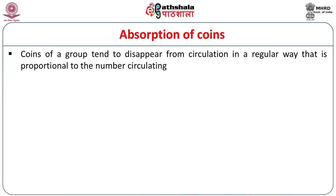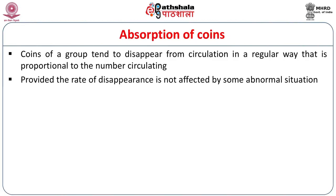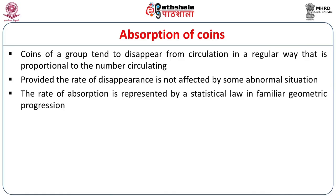This can also be termed as absorption of coins. Coins of a group tend to disappear from circulation in a regular way proportional to the number circulating — there is a sudden drop when fresh coins enter the market, as people tend to hold new coins. This sudden drop in the number of coins in circulation is known as absorption. When the number of coins reduces to half, that time period is known as the half-life of a coin. The rate of absorption follows a statistical law in familiar geometric progression.